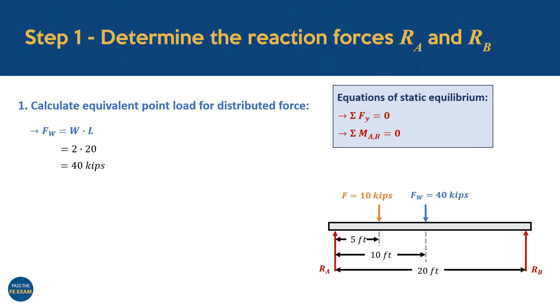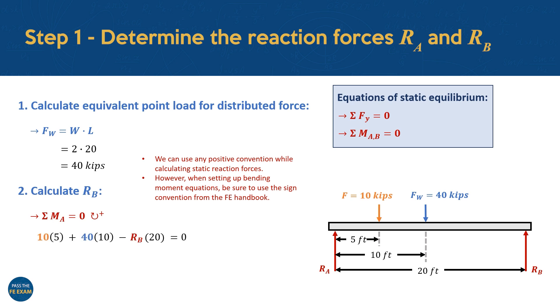Starting with reaction RB, we can take the moment about point A and set the sum of these moments equal to zero. Here we'll assume that a positive moment acts in the anti-clockwise direction. The moment about point A due to the point load is 10 kips multiplied by the distance to this point, which is 5 feet. Next, we add the moment due to the equivalent load, 40 kips, multiplied by the distance from point A to the beam's center, at 10 feet. Lastly, we account for our unknown load RB, which is applied at a distance of 20 feet from point A. When summing the moments about point A, we stick to our chosen sign convention. Therefore, the moments from the applied loads are added as positive terms, while the moment from the reaction force RB is subtracted from the equilibrium equation.